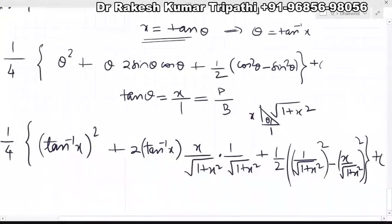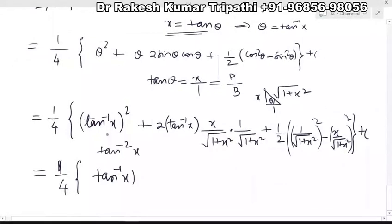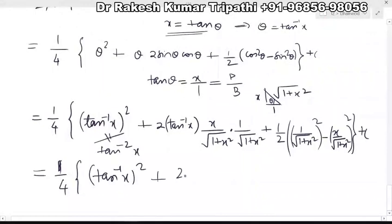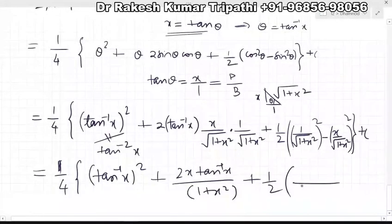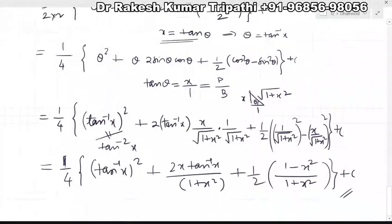Now we shall simplify it. One by four is the common factor. The first term is (tan⁻¹x)² — note you cannot write tan to the power −2 for this. The second term has numerator 2x tan⁻¹x and denominator √(1+x²) · √(1+x²) = (1+x²), plus 1/2 times (1−x²)/(1+x²). Since both fractions share denominator (1+x²), combining gives numerator (1 − x²), plus integral constant C. So finally this is the integral of tan⁻¹x/(1+x²)², an important integral.